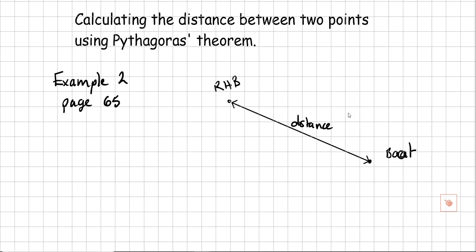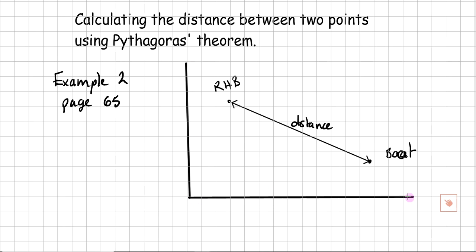In the book you can see there is a set of axes and we've got coordinates. The coordinates of Robin Hood's Bay are 2.5 and 4.6, and those are the coordinates of the boat too. You can tell from the way I'm doing this that I've not bothered to put the grid in — all I'm really interested in are the numbers. We should be able to do this just with the numbers.